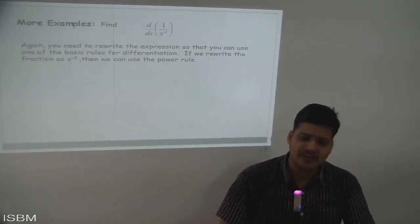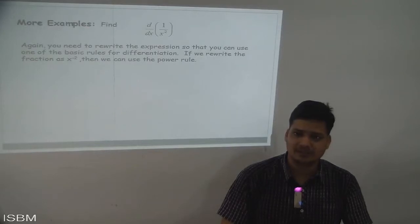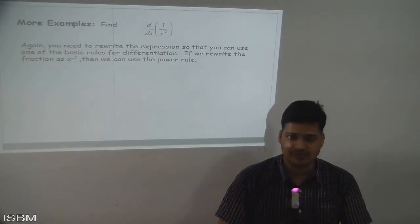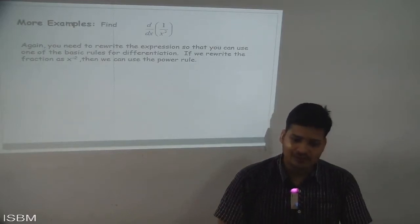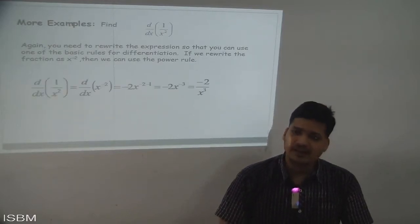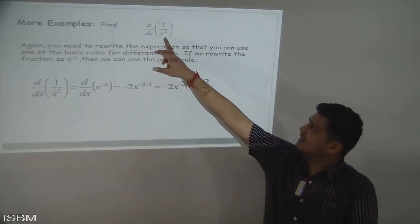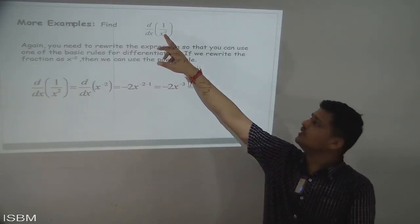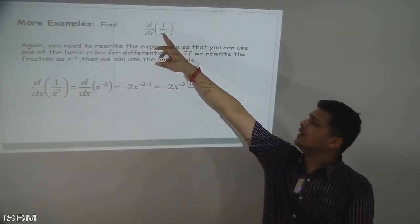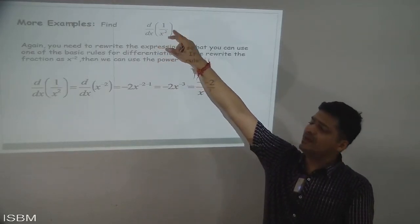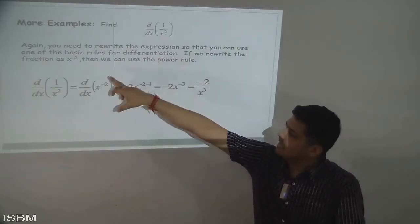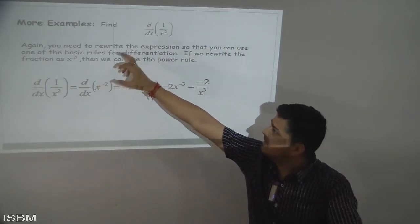Now find d/dx of 1/x². We rewrite 1/x² as x^(−2), because when a term moves from denominator to numerator the exponent becomes negative.